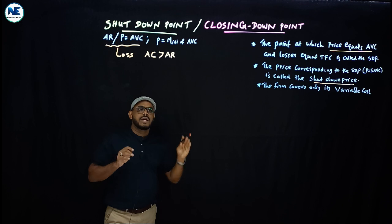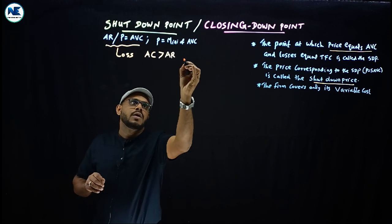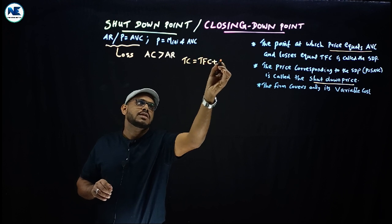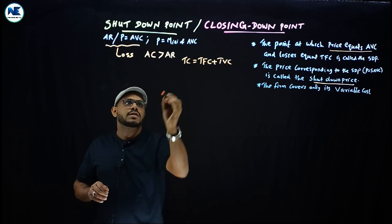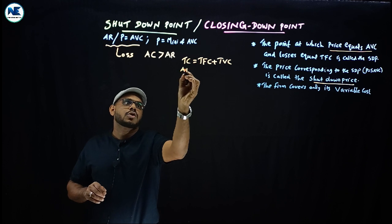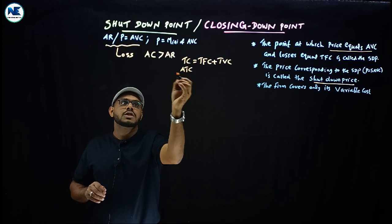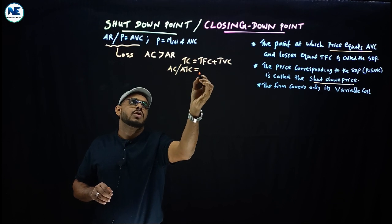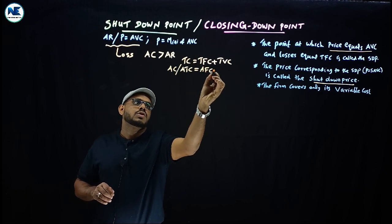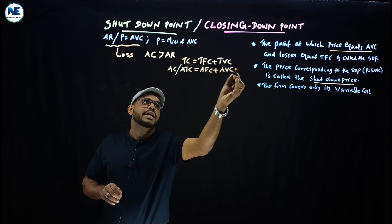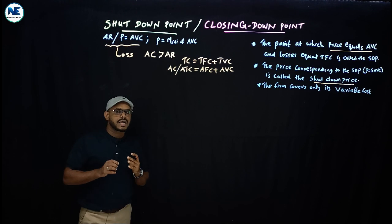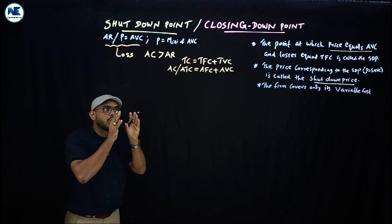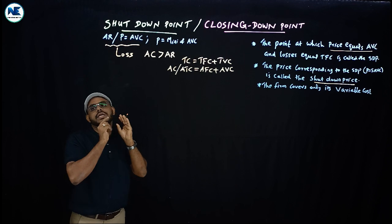Now we can represent the shutdown point through a simple diagram. Recall that total cost equals total fixed cost plus total variable cost. Similarly, average total cost equals average fixed cost plus average variable cost. We will now represent the shutdown point or closing down point through this diagram.